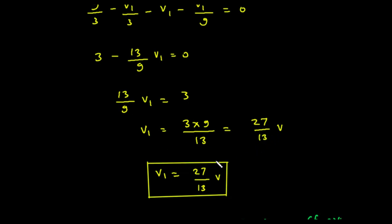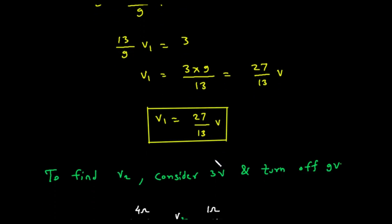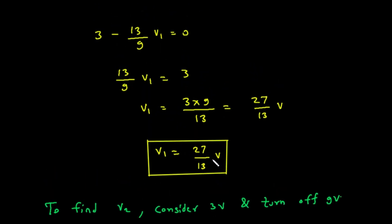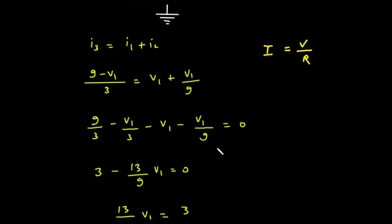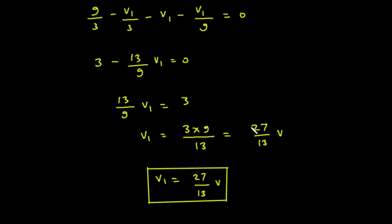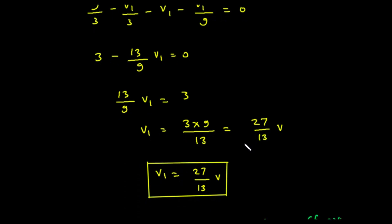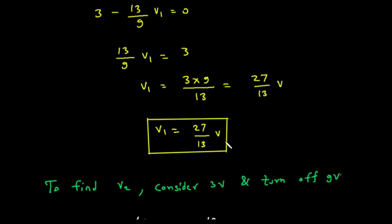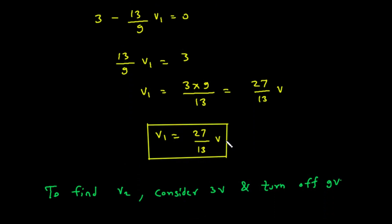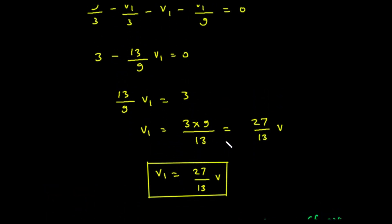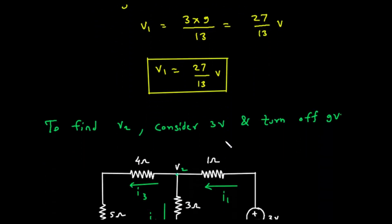Now, it's worth noting that the calculation shown in the provided image for this first part seems to have a different and confusing setup for its equation, but it coincidentally arrives at the same correct result of V1 equals 27 over 13. The method we just walked through is the standard and correct way to apply KCL for this circuit. So, we have our first piece of the puzzle, V1 is 27 over 13 volts.